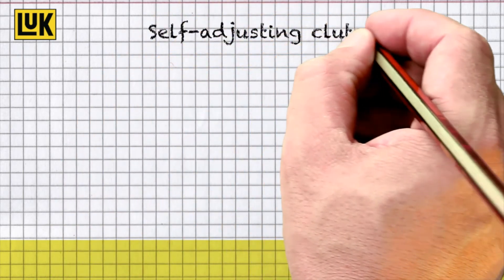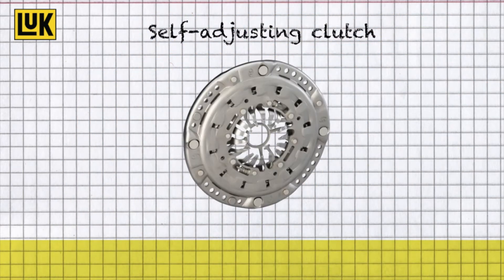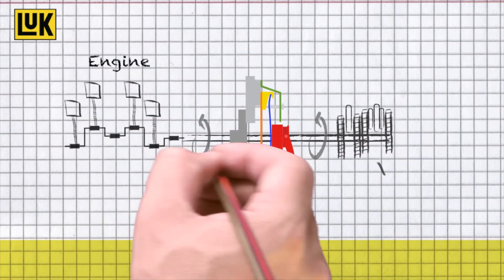What exactly is a LUKE self-adjusting clutch? The clutch is positioned between the engine and the gearbox and controls the transmission of power.